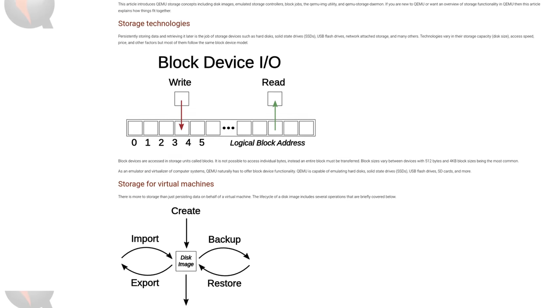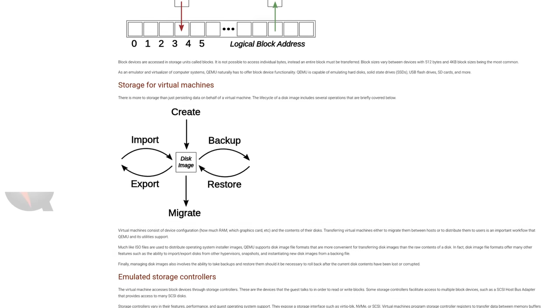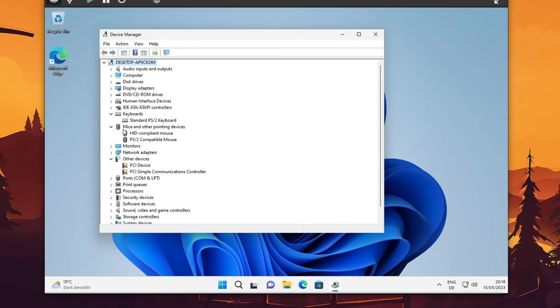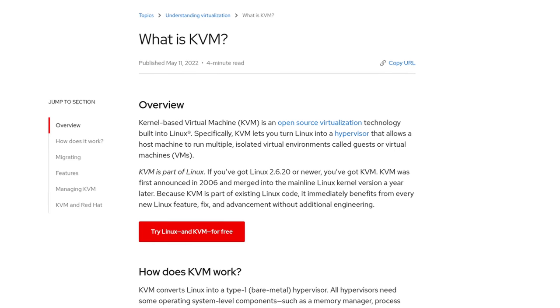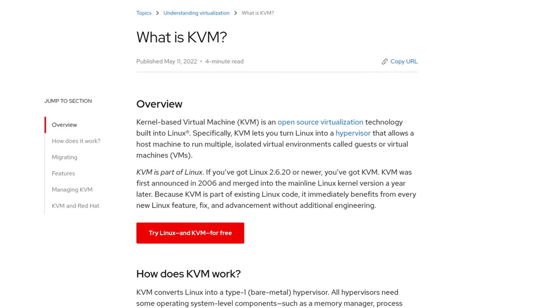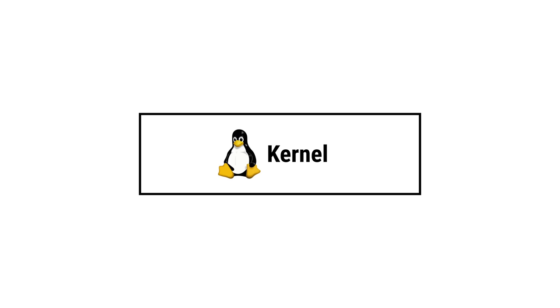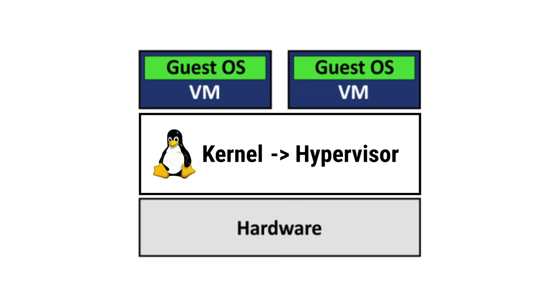QEMU handles everything from creating virtual drives to install your operating system on, turning virtual machines on and off, and also integrates your peripherals like a mouse or keyboard via its own driver. So what is KVM then? KVM stands for Kernel-based Virtual Machine and it's part of the Linux kernel. What KVM does is that it converts the kernel to a type 1 hypervisor, which directly handles the hardware for virtual machines.